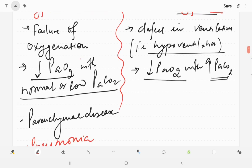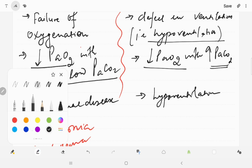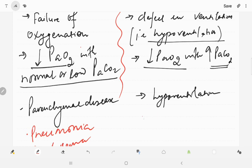However, Type 2 will be present in any condition causing hypoventilation, for example obstructive disease like COPD (chronic obstructive pulmonary disease).